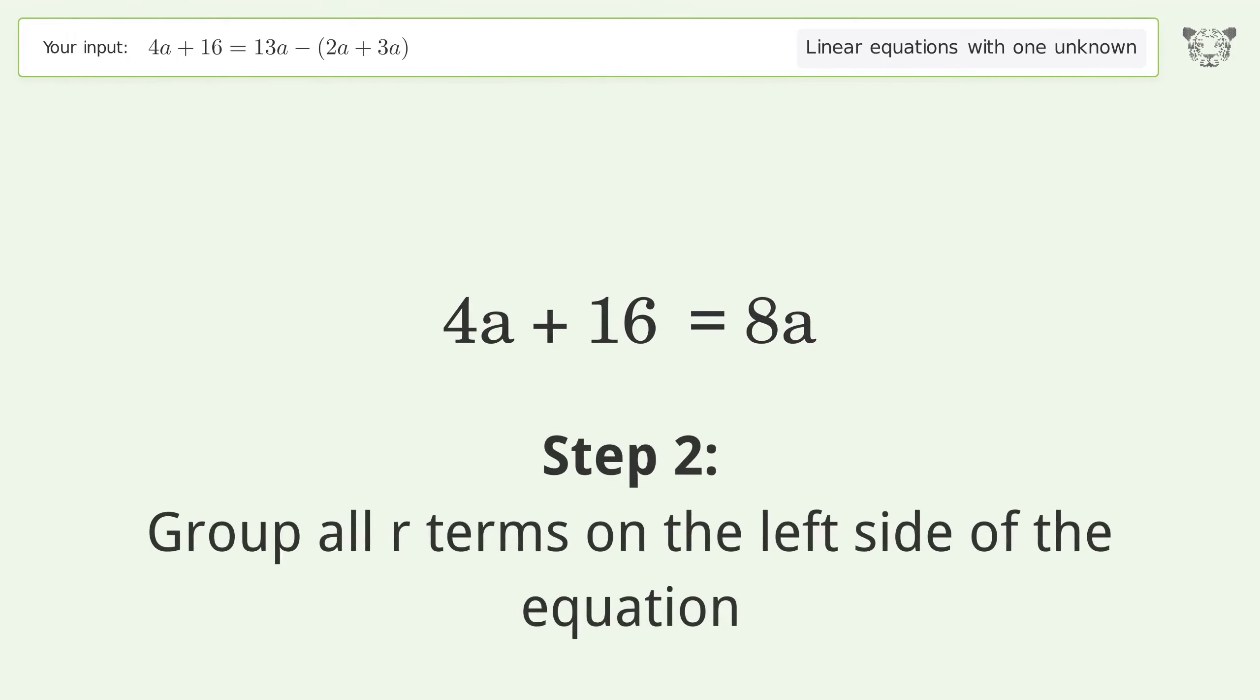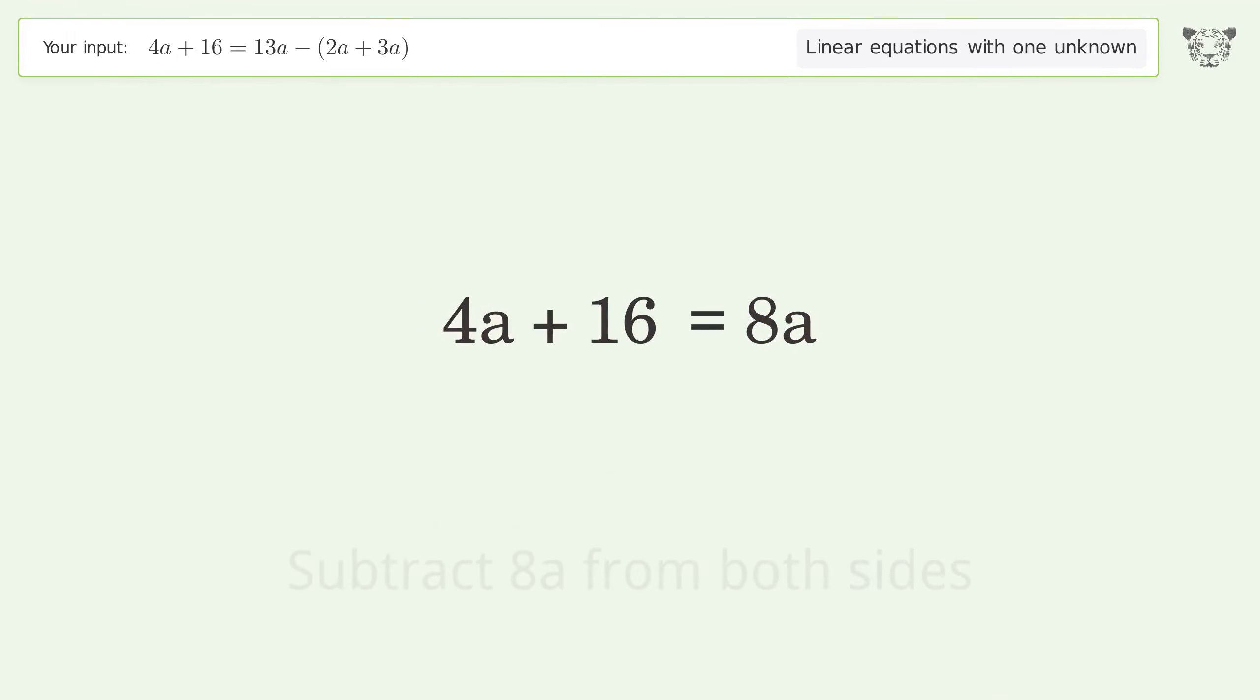Group all our terms on the left side of the equation. Subtract 8A from both sides. Group like terms. Simplify the arithmetic.